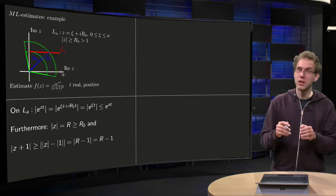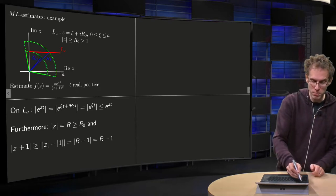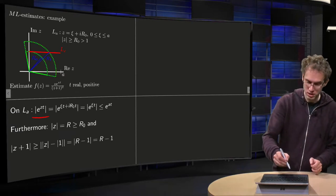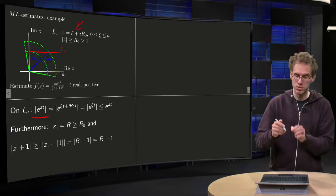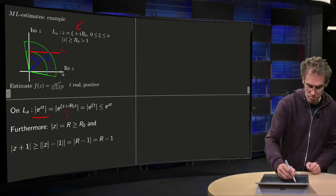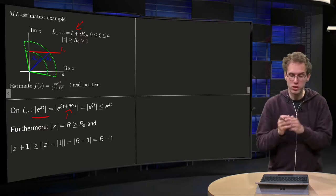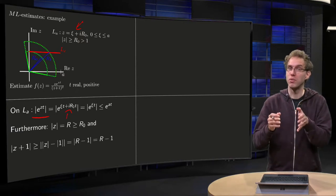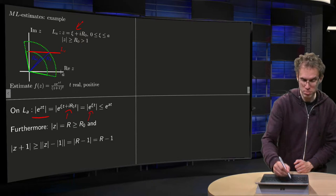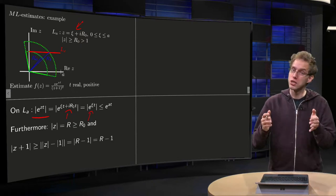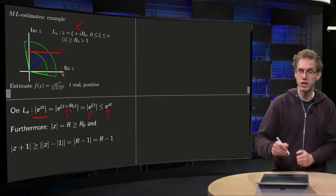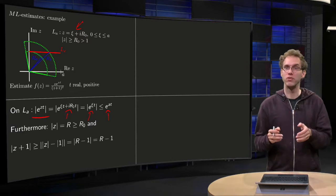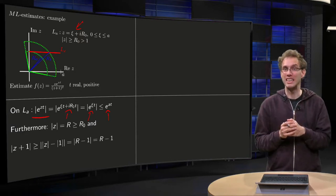Well, on LA, we know that this e to the power zt will be bounded. The modulus of e^(zt), because z equals ξ plus i times R0, you plug that z in, then you get the modulus of e^(ξt) times the modulus of e^(iR0t). The modulus of e^(iR0t) equals 1, so we're left with the modulus of e^(ξt). Since ξ is smaller than a, this is smaller than or equal to e^(at), and both a and t will be some bounded numbers, which means that the modulus of e^(zt) will be bounded.